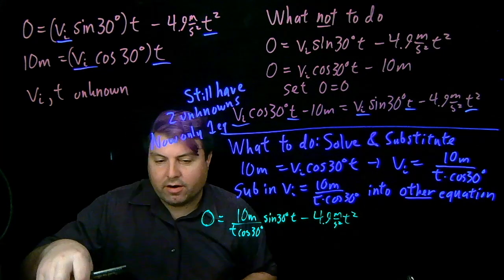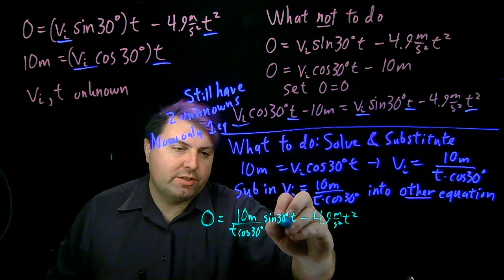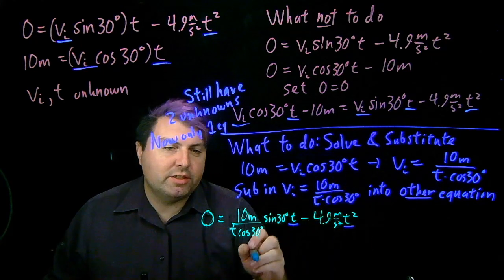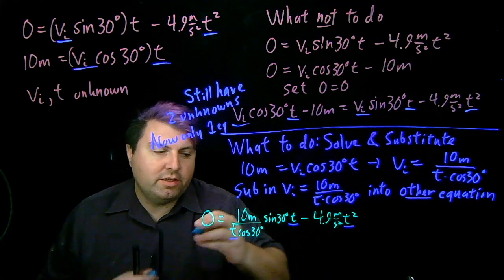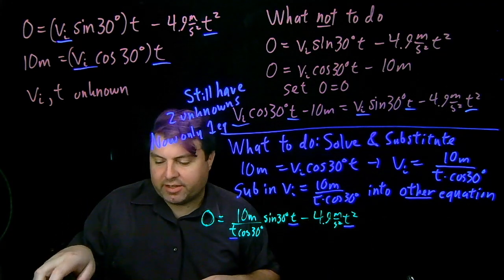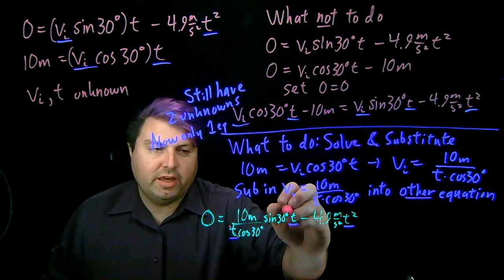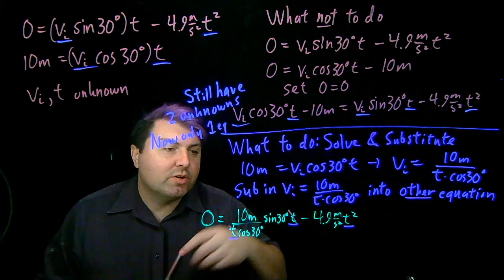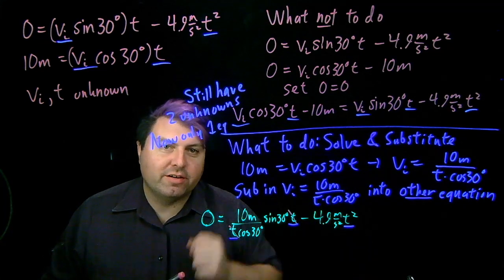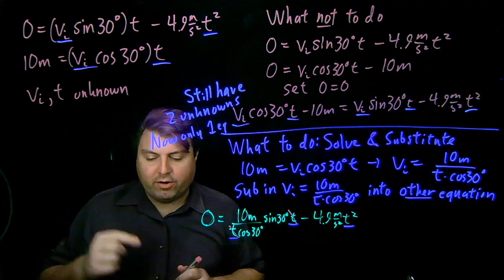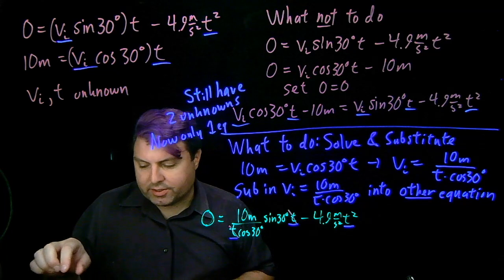So let's look here. Here I have just t on this side, t² on this side, t here. In fact, since I have t on top and t on bottom, I can even cancel these two. So really only have this t² here, so now I only have one equation, one unknown, so I can solve for it.